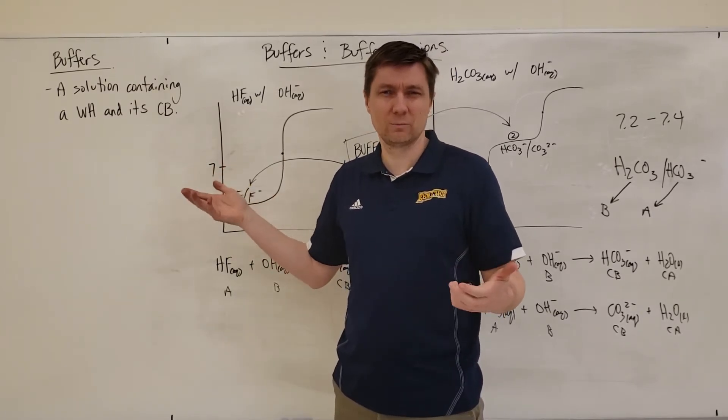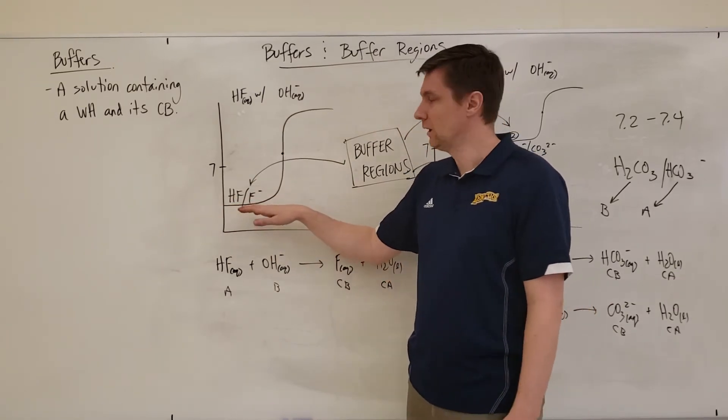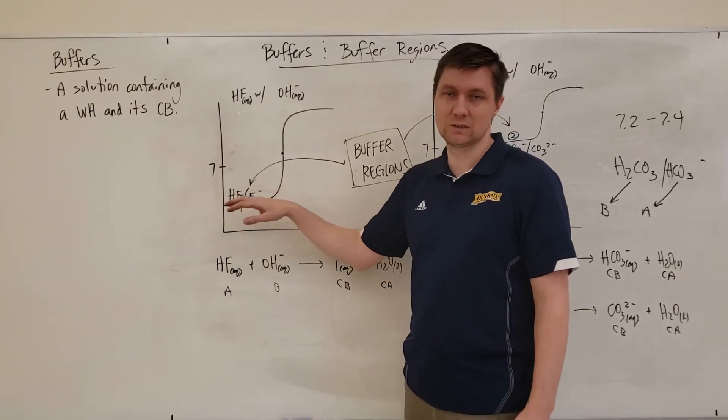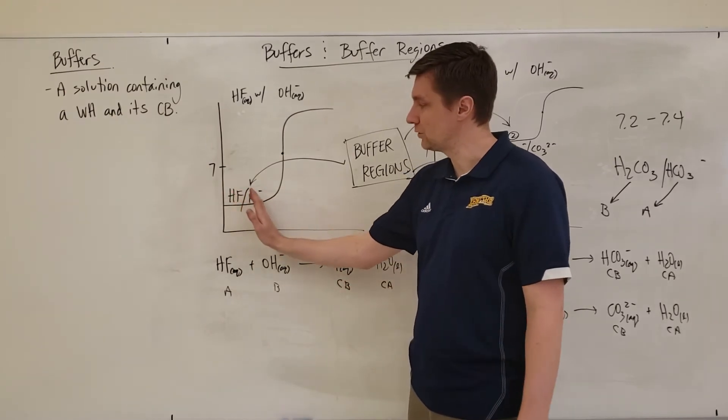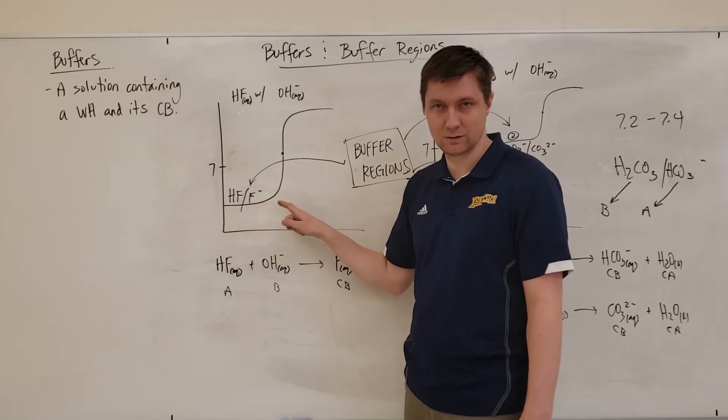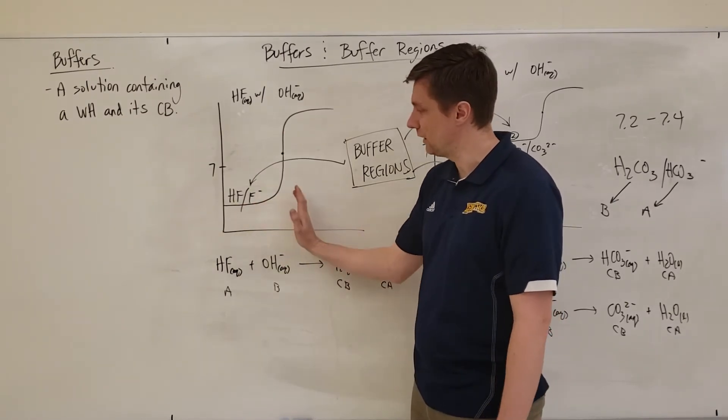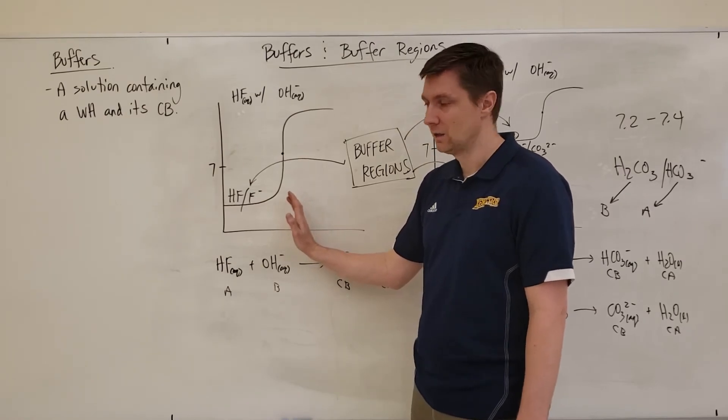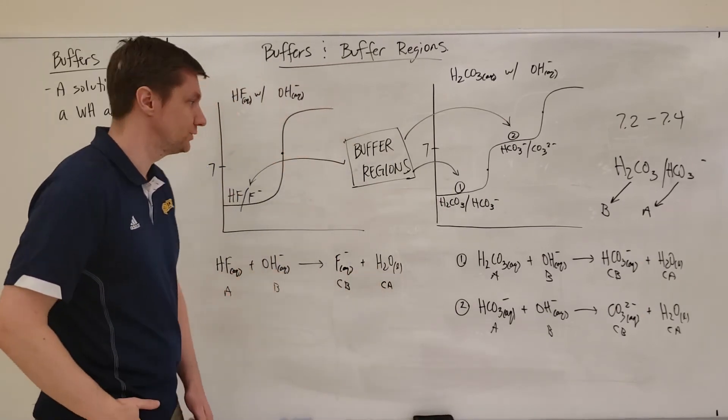But what does a buffer do? What does a buffer mean? Well, a buffer does just that. It buffers pH. It makes it so that the pH stays at a relatively constant level. And so if I add more hydroxide ions to this, you can notice that the pH stays relatively constant for a set amount of volume. But at some point, if I add enough hydroxide to this, the buffer is going to run out. And then that's when I see a sharp rise in the pH in this titration.